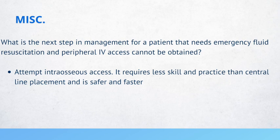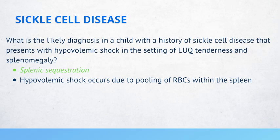Now let's review some high-yield hematology concepts. What is the likely diagnosis in a child with sickle cell disease that presents with hypovolemic shock in the setting of left upper quadrant tenderness and an enlarged spleen? Splenic sequestration. Hypovolemic shock occurs due to the pooling of red blood cells within the spleen. So remember: sickle cell disease, hypovolemic shock, left upper quadrant tenderness, and enlarged spleen — think splenic sequestration.